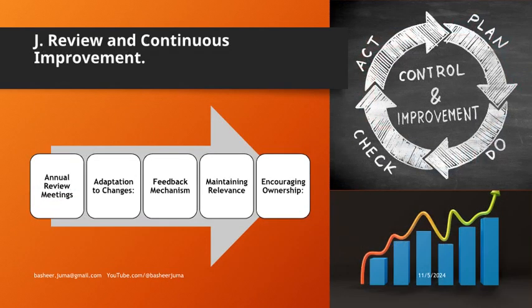Review and continuous improvement. Annual review meetings conduct regular reviews of the family constitution. Adaptation to changes updates policies as family or business needs evolve. Feedback mechanism collects feedback from family members for improvements. Maintaining relevance ensures the constitution remains practical and applicable. Encouraging ownership involves all family members in keeping the constitution current.